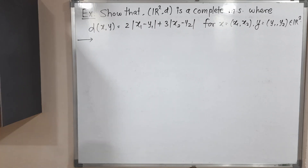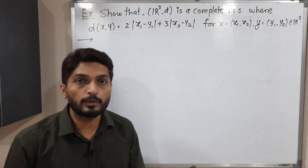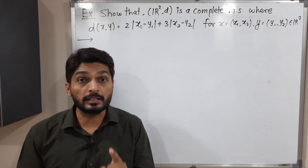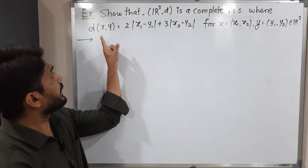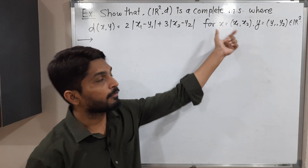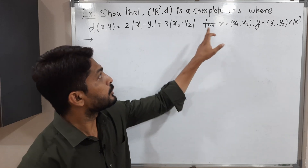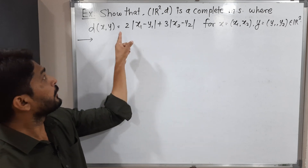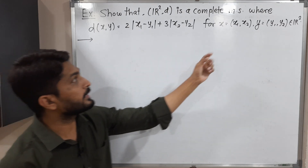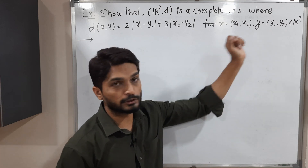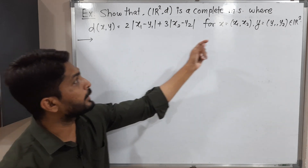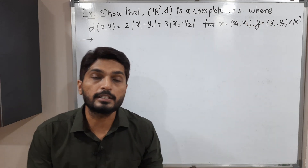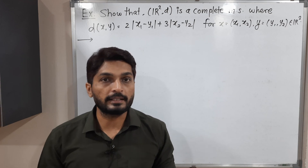Hi everyone. In this video we are going to discuss this example. Here we have to prove that ℝ² with metric D is a complete metric space. D is defined differently here: D(X,Y) = 2|x₁ - y₁| + 3|x₂ - y₂|, where the first component minus first component plus three times the second component minus second component. So in this way D is defined and we have to prove it is a complete metric space.